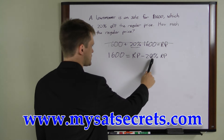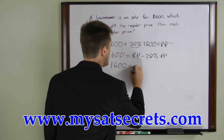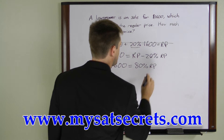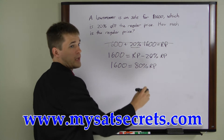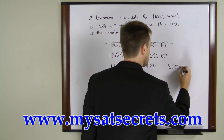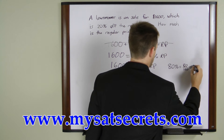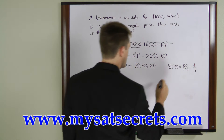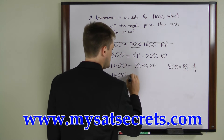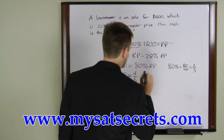Since it's regular price minus 20%, you can rewrite this as: $1600 equals 80% of the regular price. Now, 80% can be written as a fraction — 80 over 100, which equals 4 over 5. Plugging that back in gives us: $1600 equals four-fifths times the regular price.